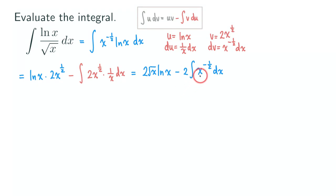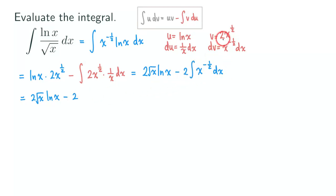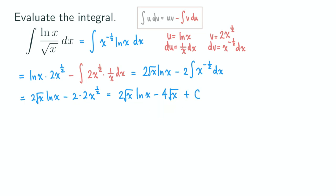We just need to integrate x to the negative 1/2 — which we already did when finding v from dv — so we copy that answer. We get 2 square root of x times ln(x), minus 2 times 2x to the 1/2, which gives us 2 square root of x times ln(x) minus 4 square root of x. Adding the constant of integration, the final answer is 2√x · ln(x) − 4√x + C.